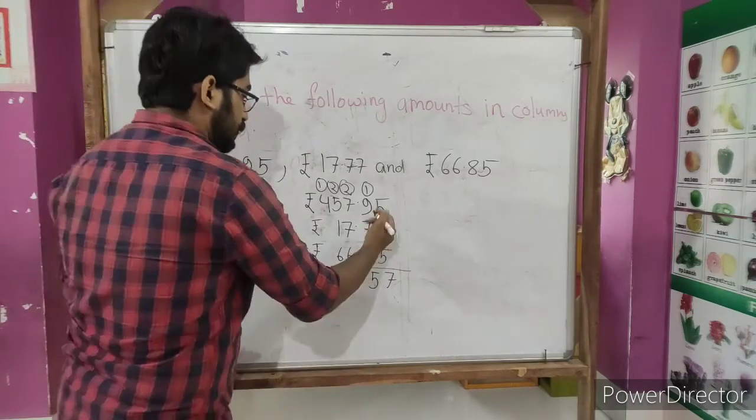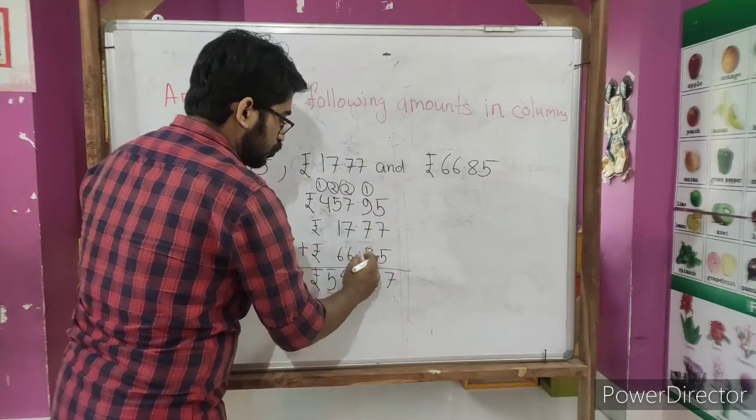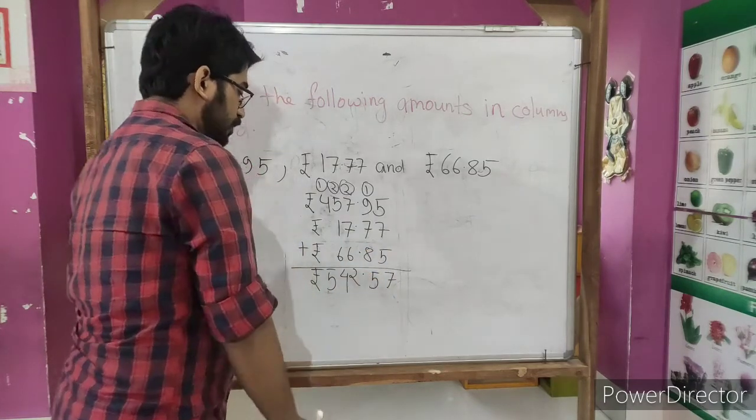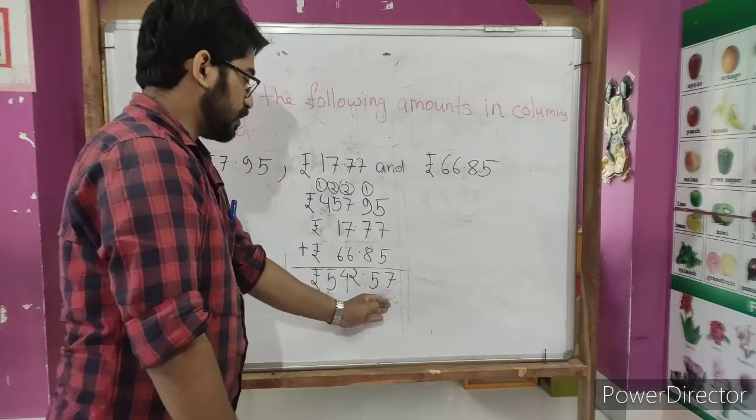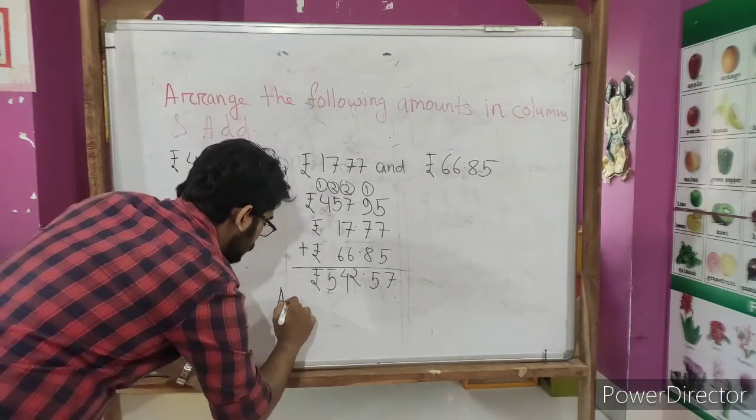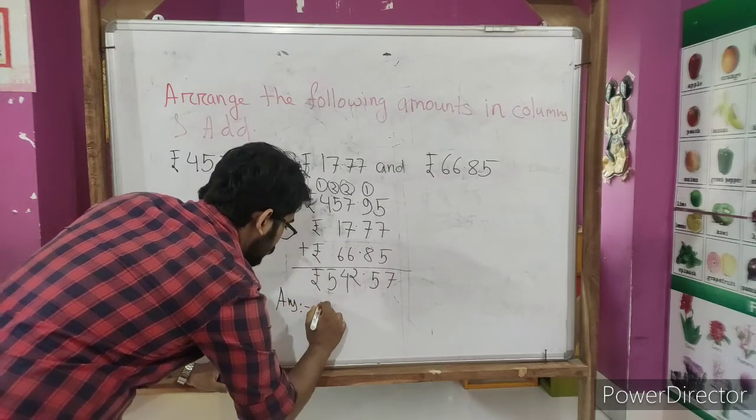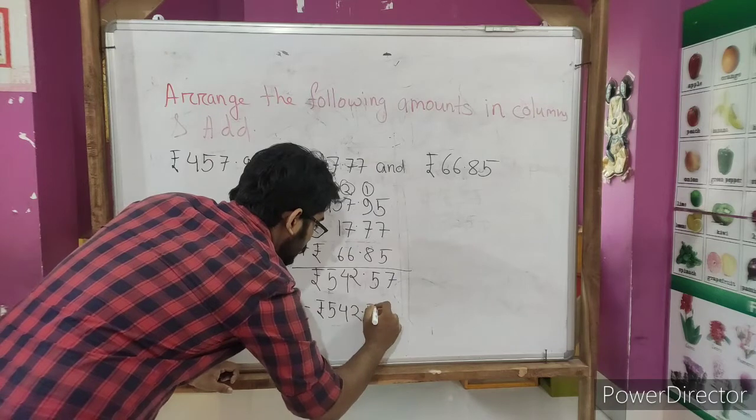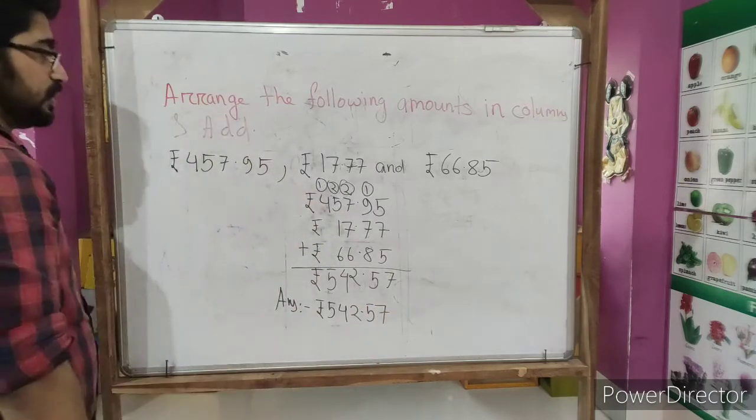After that I have given this, and before two numbers there is a dot or the point which separates the paise from the rupees. So answer is, you need to write the answer also because it also carries some marks: 542.57. That's it. So simple. You need to do other additions also.